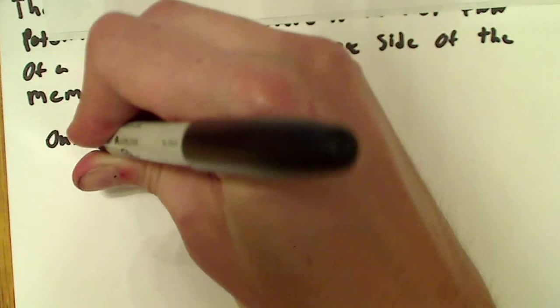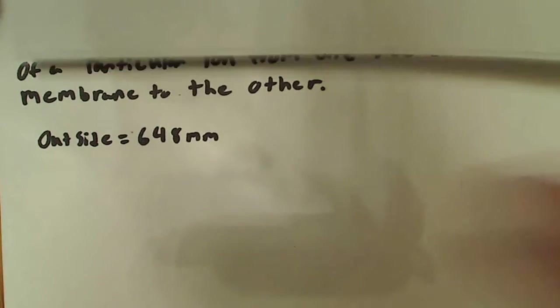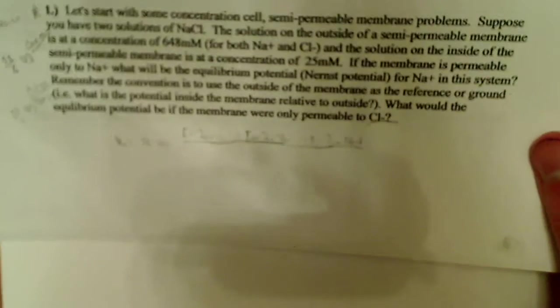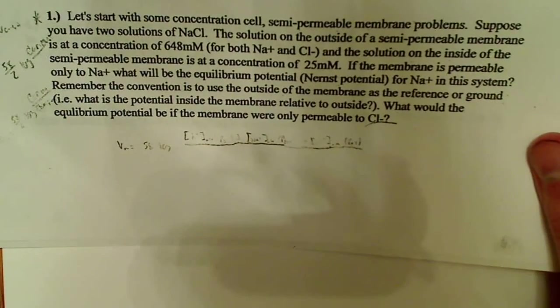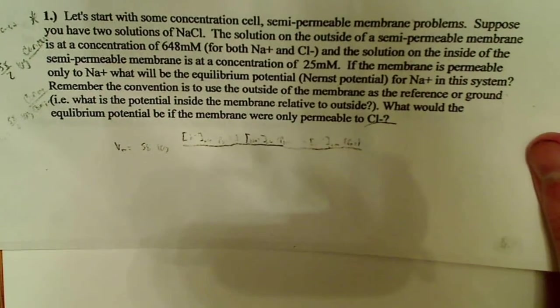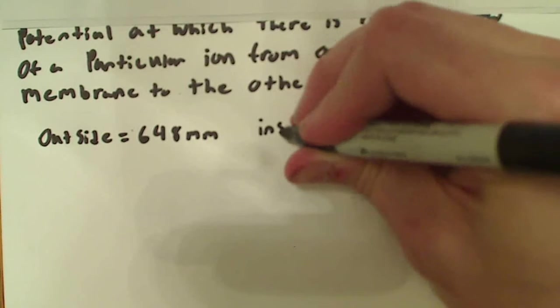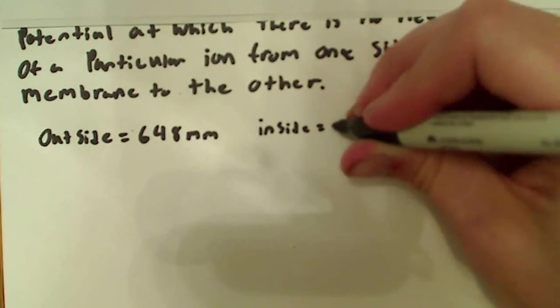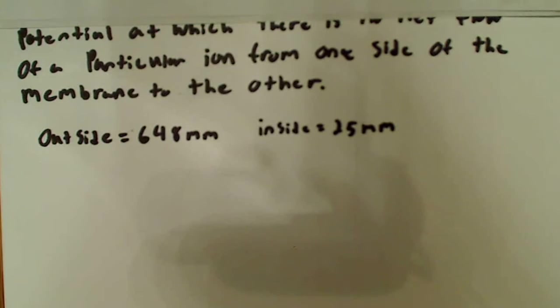So, I would say, outside is equal to 648 millimoles, and that's for both Na+ and Cl-. Okay, and the solution on the inside of the semipermeable membrane is at a concentration of 25 millimoles. So, inside is equal to 25 millimoles.